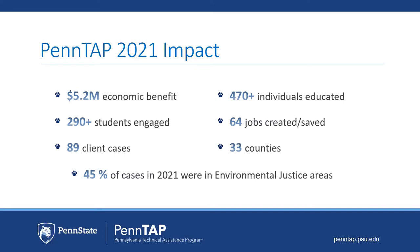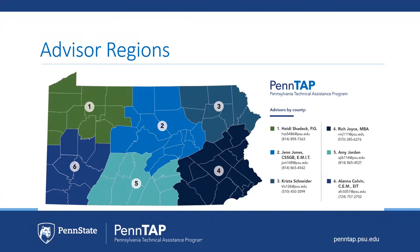If you're interested in learning more about PennTAP and the work that we do, you can contact any one of our six regional advisors — their names are listed on the right. Each of us are embedded in the communities that we serve, which allows us to better understand the issues important to the communities, to the businesses, and to the local Commonwealth campuses. We know our regions and we like to build our partnerships there. This information is also on our website.